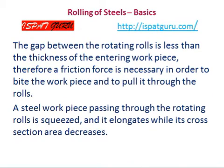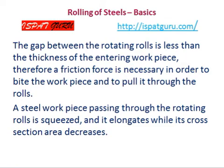The gap between the rotating rolls is less than the thickness of the entering workpiece. Therefore, a friction force is necessary in order to bite the workpiece and pull it through the rolls. A steel workpiece passing through the rotating rolls is squeezed and it elongates while its cross-sectional area decreases.